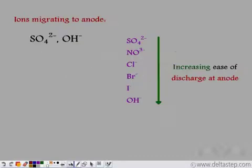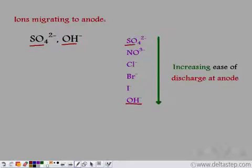Now let's look at the anions. We have two anions in the solution — sulphate and hydroxide. Only one particular anion can be discharged at the anode, so we look at their relative positions in the electrochemical series. Since hydroxide ions lie below the sulphate ions in the electrochemical series, OH⁻ gets discharged at the anode.